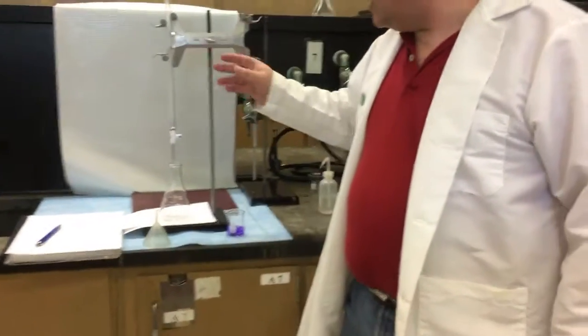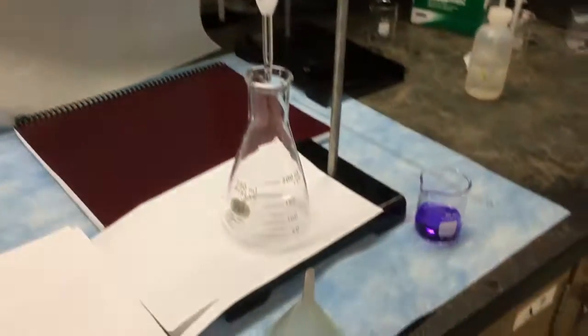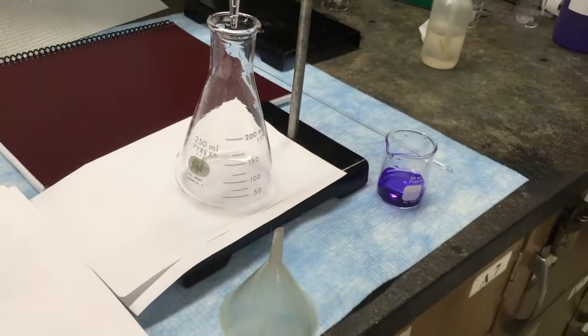You mount it on the stand so that the burette is sitting over the foot of the container. If you are working with a titration or you're looking for a color change, you usually want some white paper under it so you can see the color change more easily.